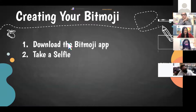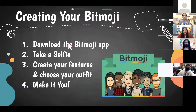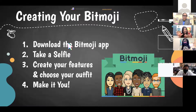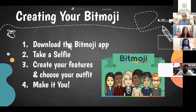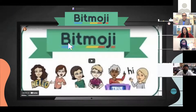To get started creating your Bitmoji, first download the Bitmoji app. Once you log in and create an account, you can take a selfie and it will superimpose your image to create your Bitmoji, or you can recreate it yourself. Add features like highlights, earrings — whatever you want. In your resources slide deck later, there's a video that walks you through it step by step.